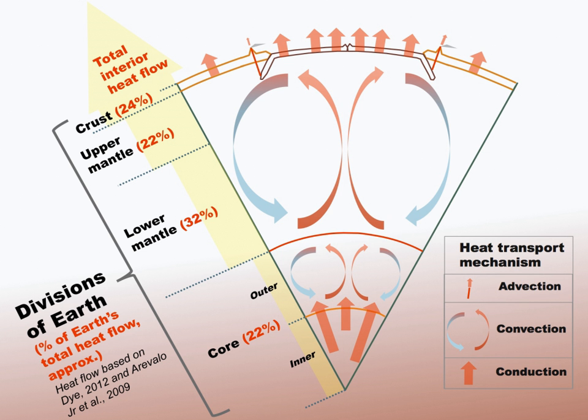The boundary between the inner and outer cores is sometimes called the Lehmann discontinuity, although the name usually refers to another discontinuity. The name Lehmann-Bullen discontinuity, after K. Bullen has been proposed, but its use seems to be rare.